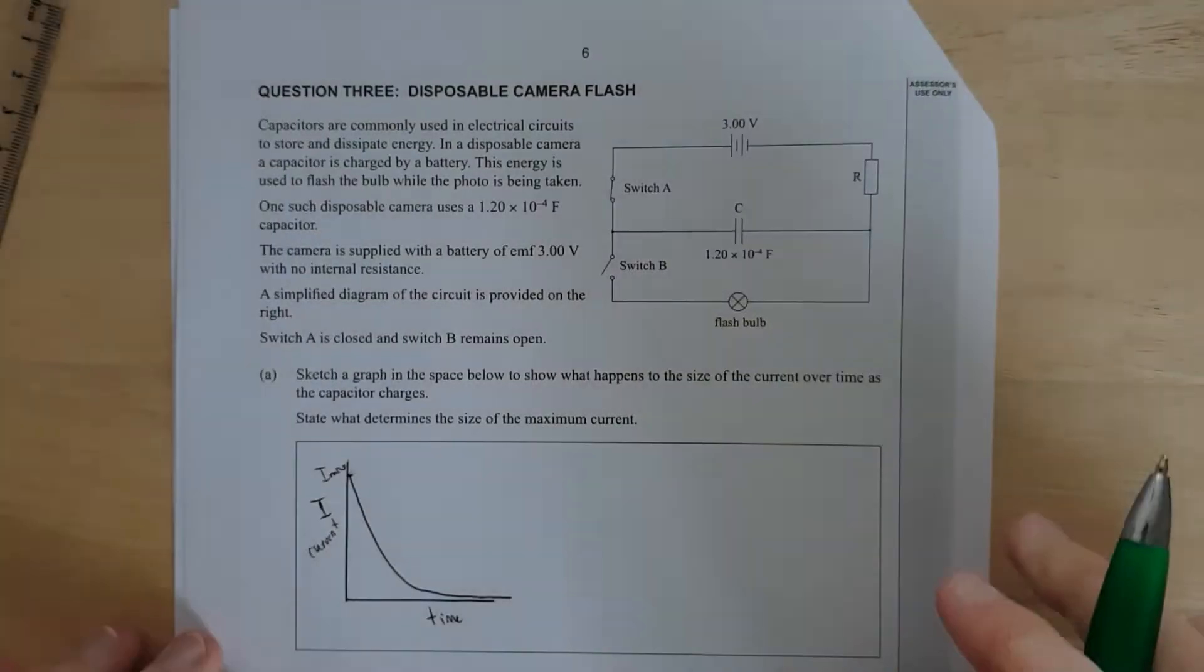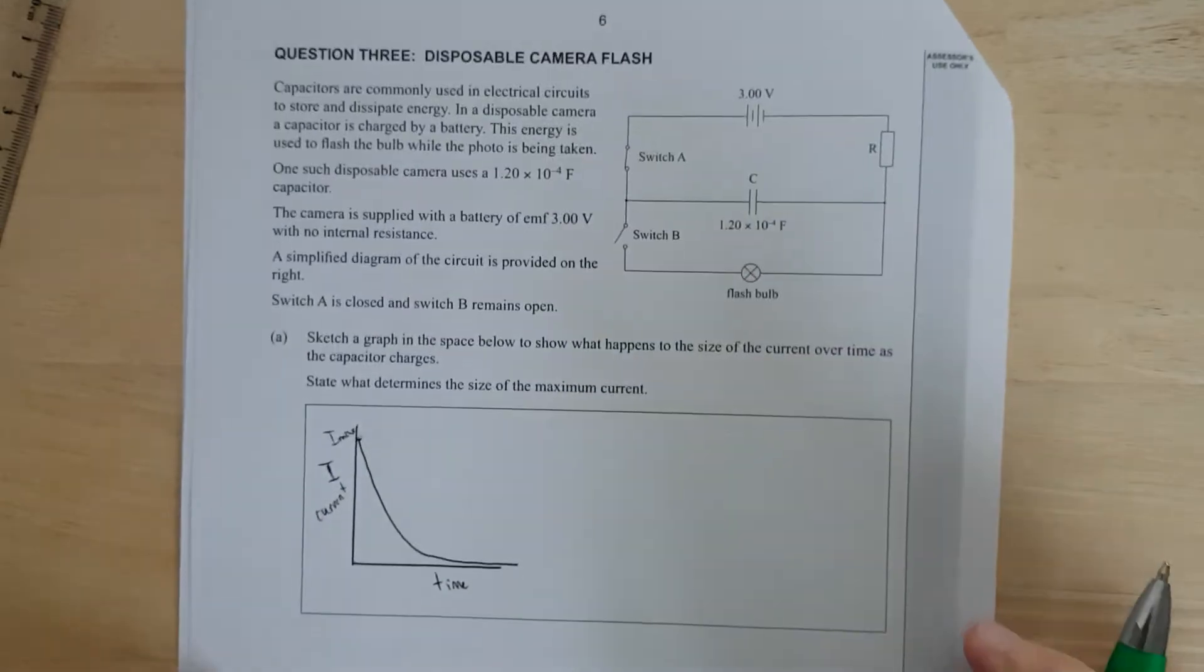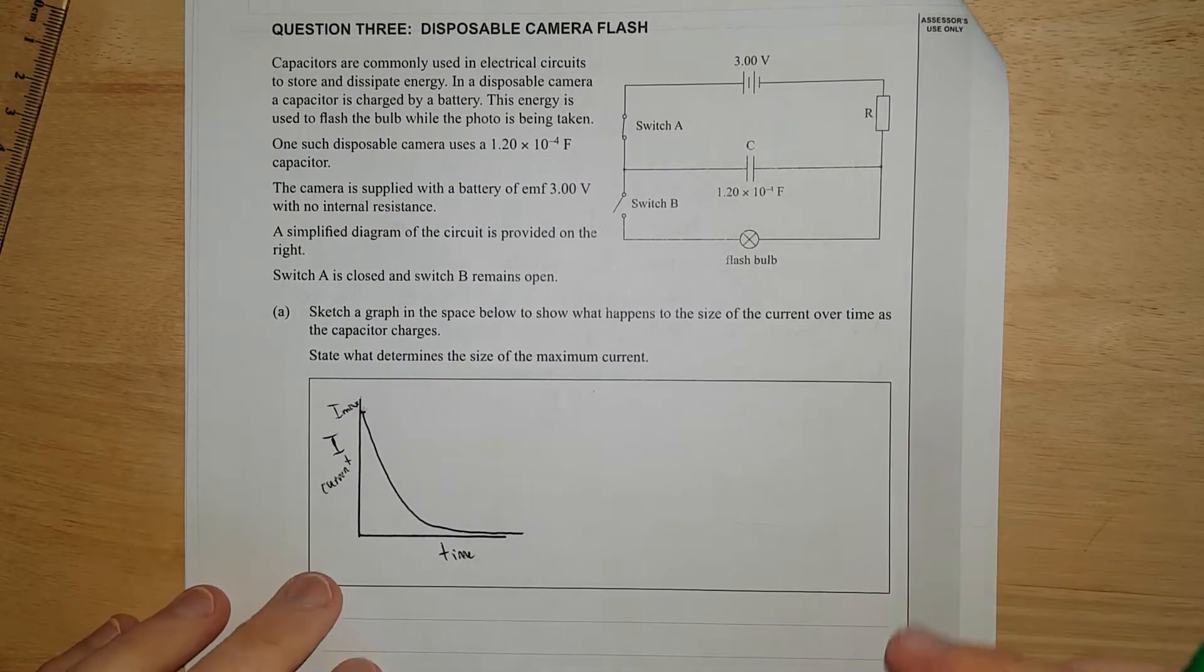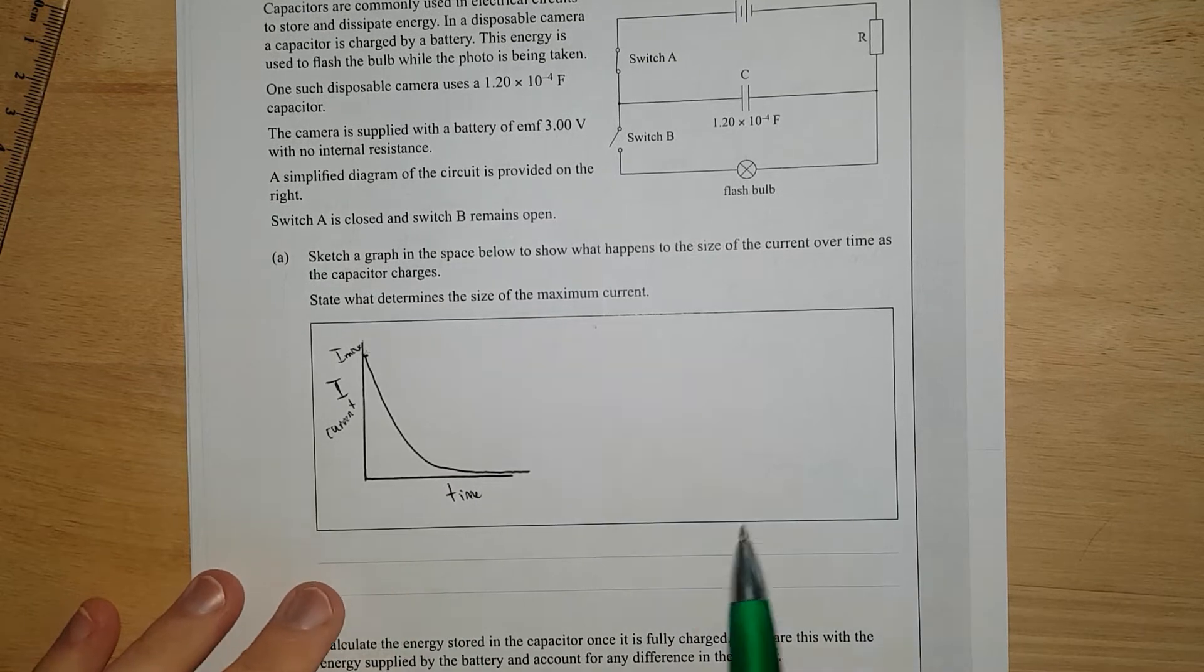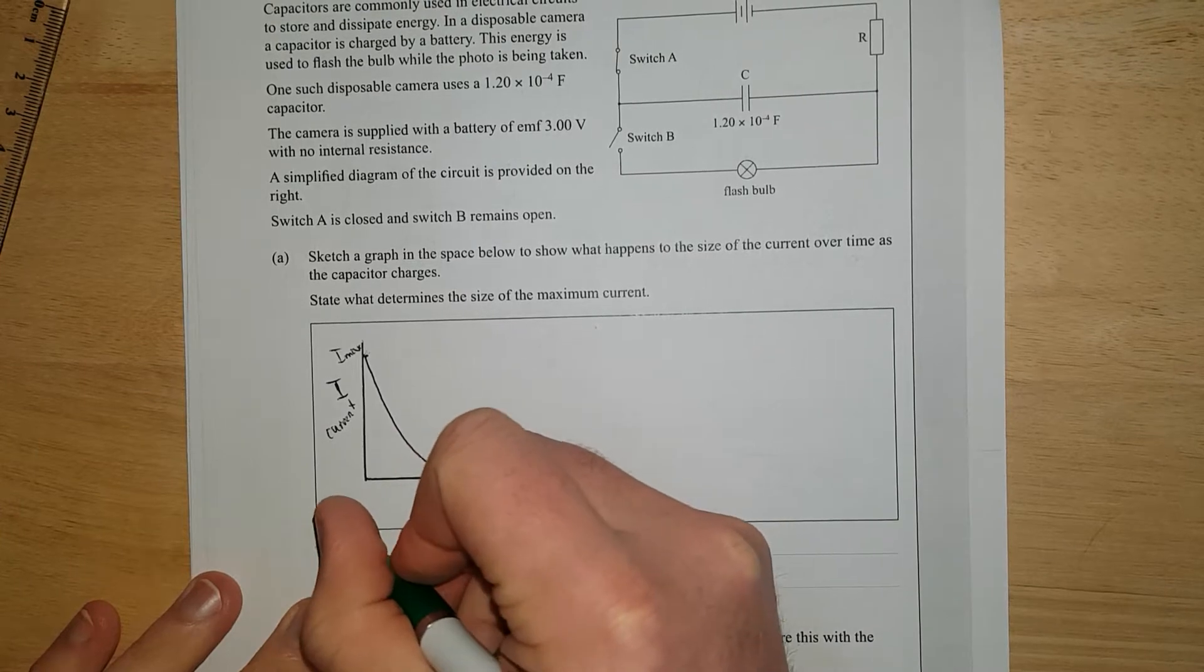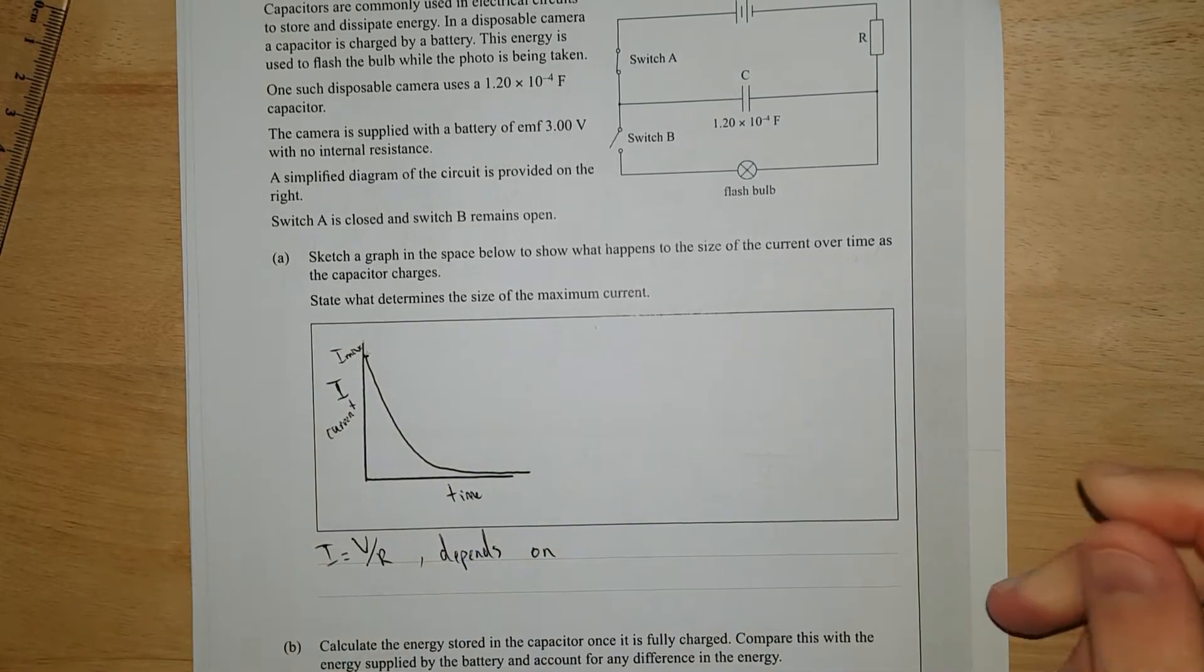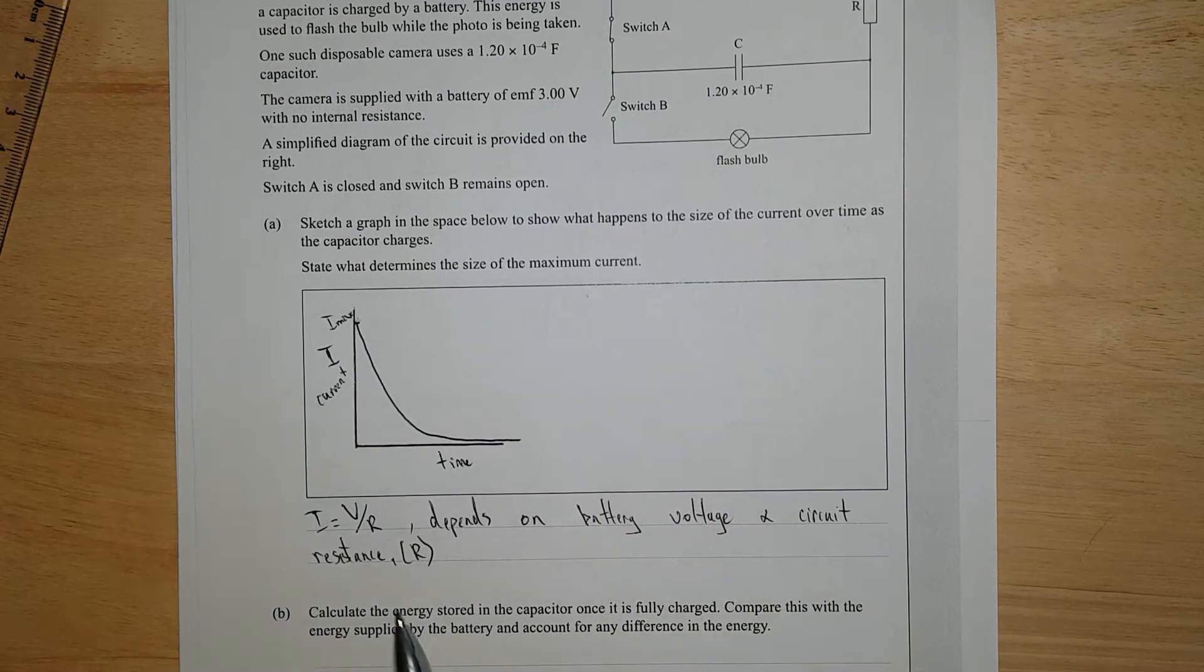State what determines the size of the maximum current. What determines the maximum current? It depends on... well, I is equal to V over R. So depends on... I'll just pause and write it. So I've said it depends on the battery voltage and circuit resistance, brackets R.